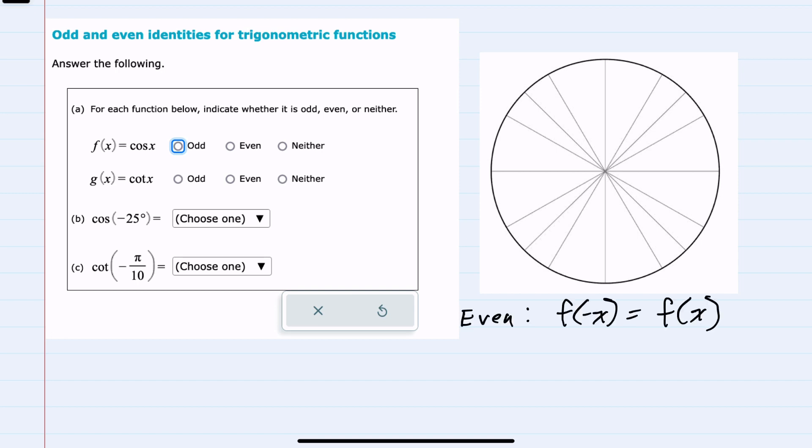We'll start by recalling that for even functions, when we substitute a negative value into that function, the outcome is exactly the same as substituting a positive value into that function. And then for odd functions, when we substitute a negative value in, we get the opposite of substituting a positive value in.